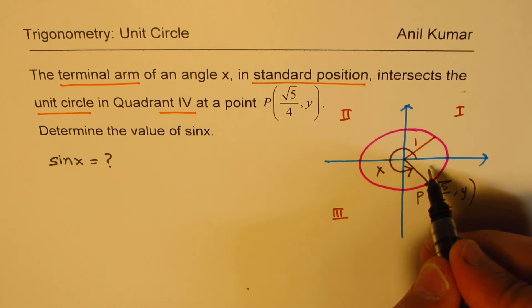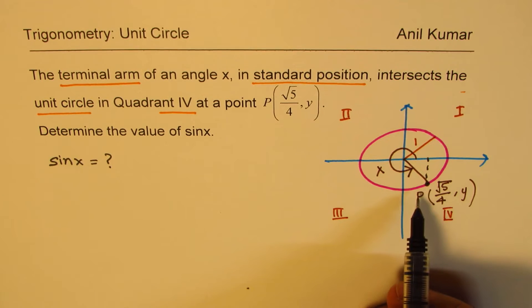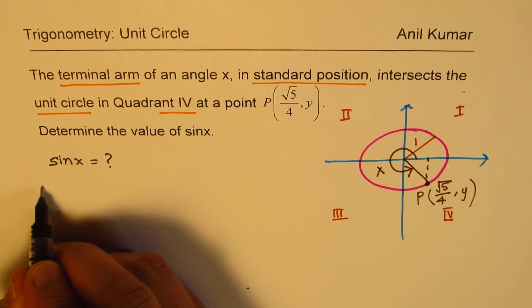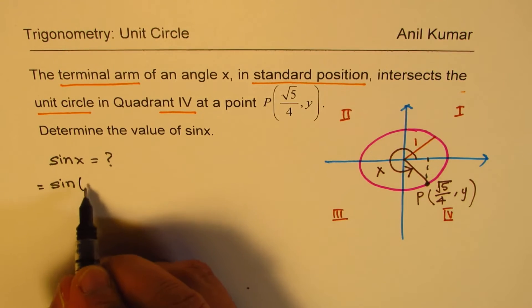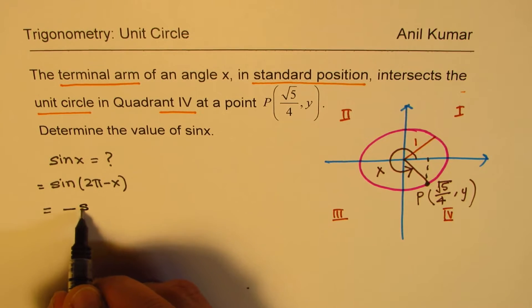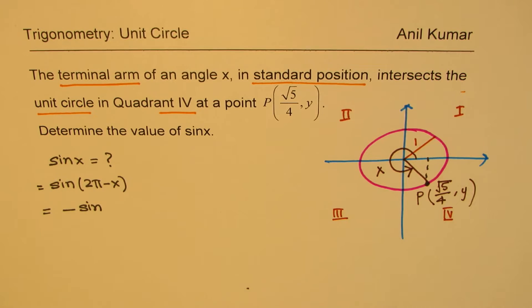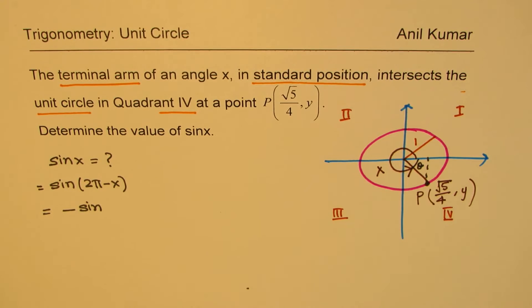Well, to find sin X, what can we do? We have this triangle here. So sin of X is as good as equal to sin of 2π minus X, which is equal to minus sin X. I mean the acute angle. Let's say this acute angle θ. So minus sin θ. Is that clear to you?